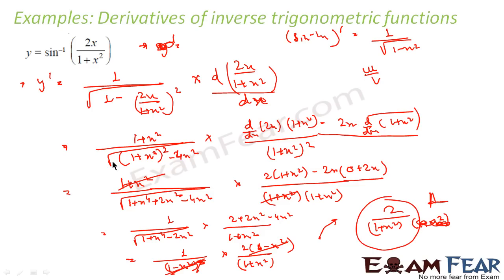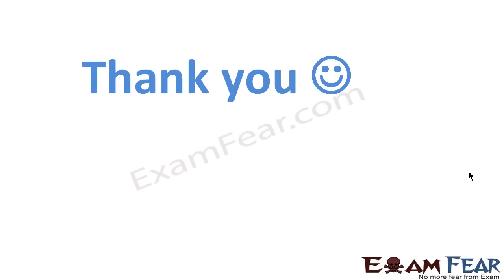So in this case I directly applied the formula. The root in the denominator and the (1−x²) factor cancel, leaving 2/(1+x²) as the answer. The next example I will take where I will not apply the formula directly.